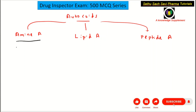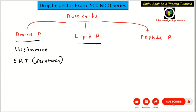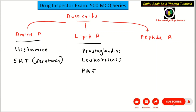Examples of amine autacoids: histamine and 5-hydroxytryptamine (5-HT), also called serotonin. Examples of lipid autacoids: prostaglandins, leukotrienes, and platelet activating factor (PAF).